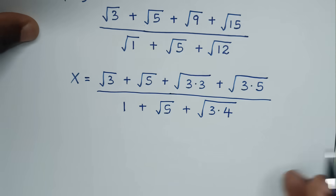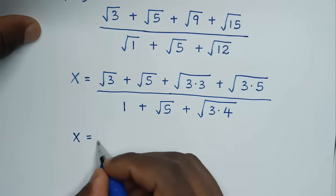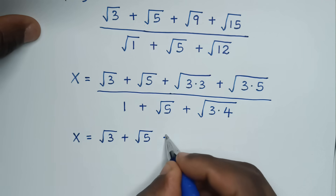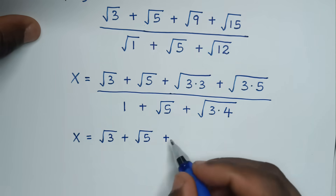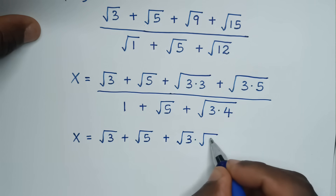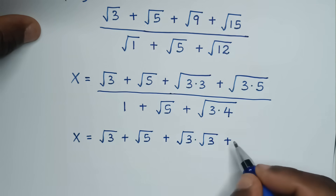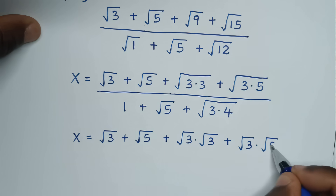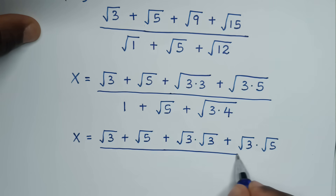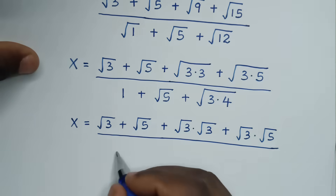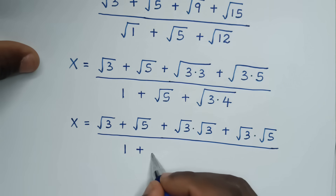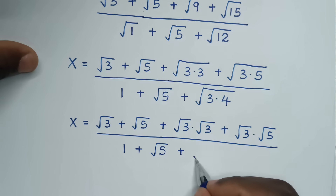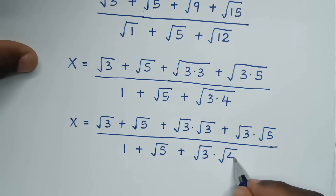In the next step, x is equal to square root of 3 plus square root of 5, then we separate square root of 9 as square root of 3 times square root of 3, and square root of 15 as square root of 3 times square root of 5, over 1 plus square root of 5 plus square root of 3 times square root of 4.